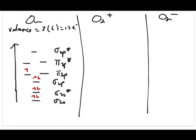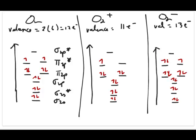Counting through the 12 electrons for O2 gives you the complete electron configuration. For O2+ and O2-, you should stop the video and try to fill them up yourself. The valence electron count is 11 for O2+ and 13 for O2-, and filling up the electron configuration gives you the corresponding results.